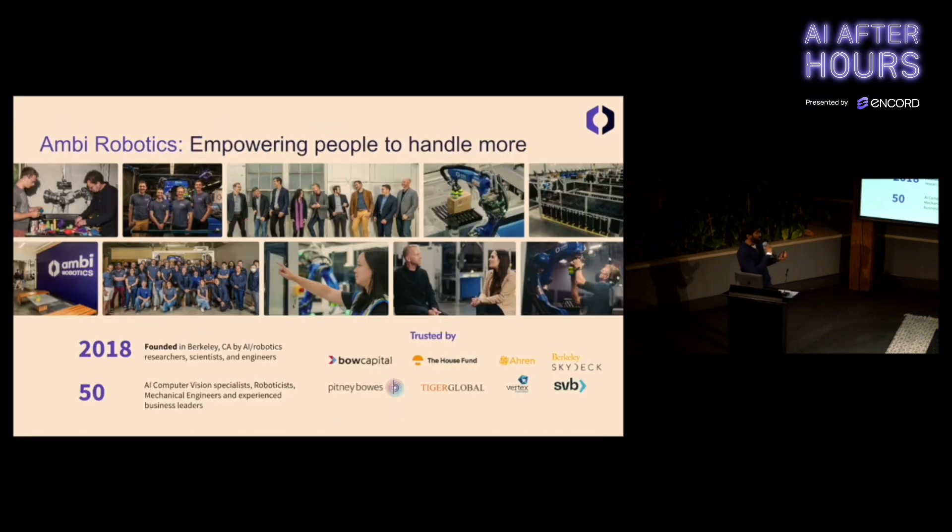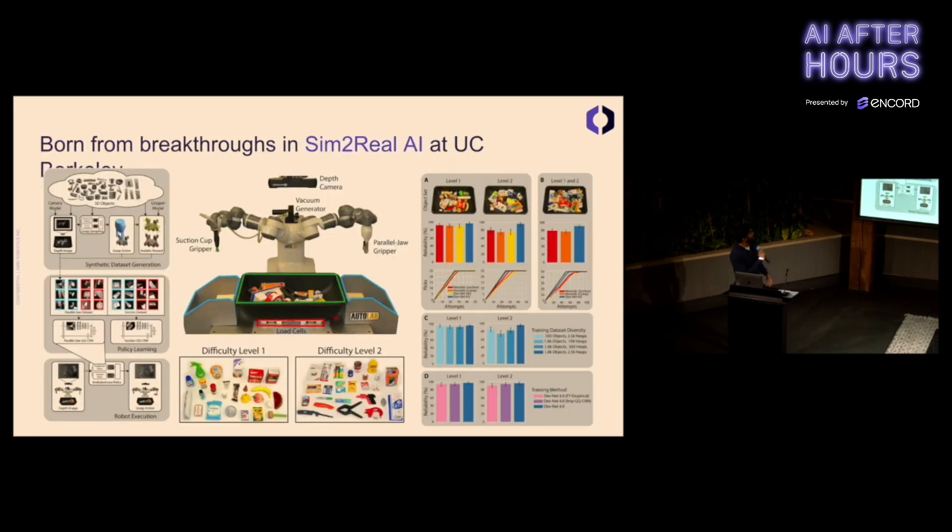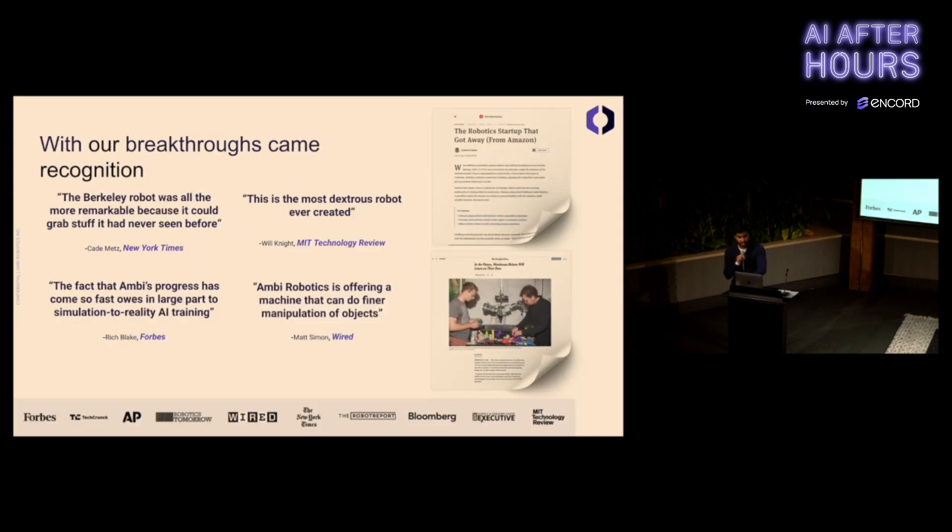At Ambi Robotics, we empower people to handle more. We were founded in 2018 in Berkeley, California, and we're now 50 strong. We were born from breakthroughs in Sim2Real AI research at UC Berkeley. Sim2Real is simulation to reality. Basically, how do you learn robust robot policies that seamlessly transfer to the real world?